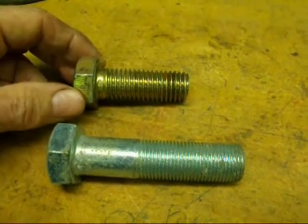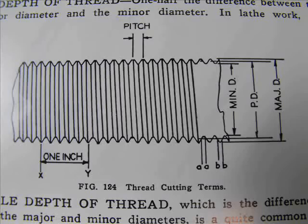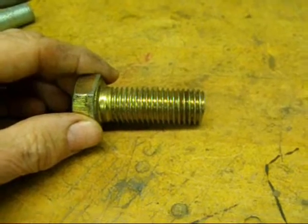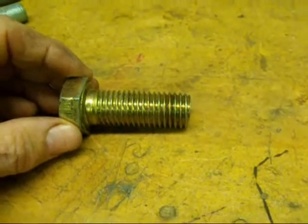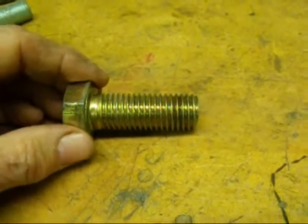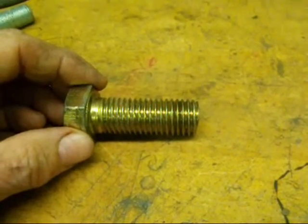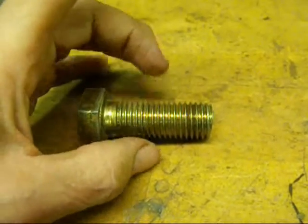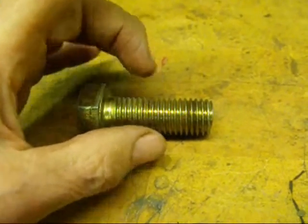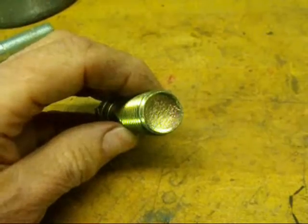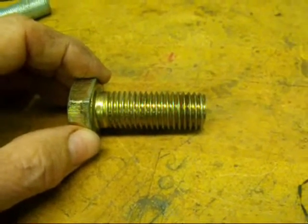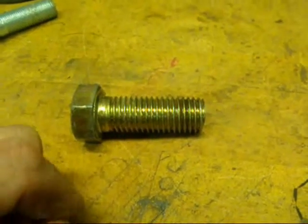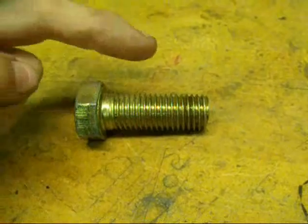The 60-degree thread form — take a look at the picture of the standard V thread. There are a few terminologies we need to cover. One is the major diameter — that's the diameter if you check with a micrometer. Then the minor diameter is the diameter at the bottom of the threads. And then the pitch diameter is the diameter from one side to the other along an imaginary line that goes halfway between the crest of the thread and the root.